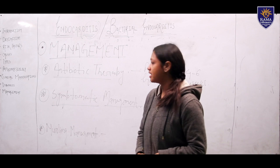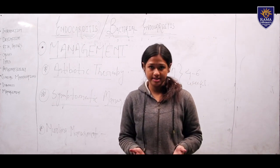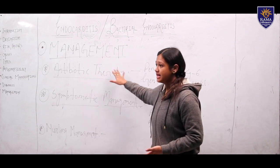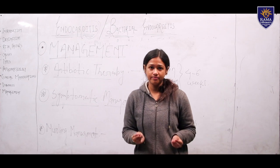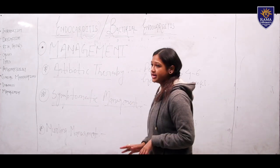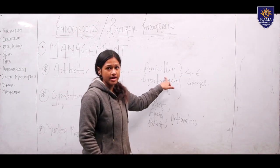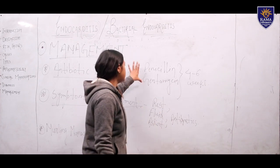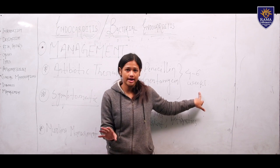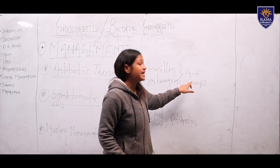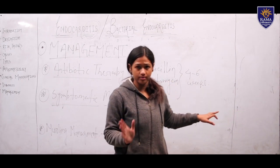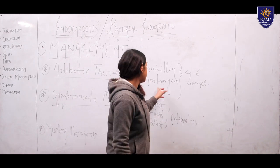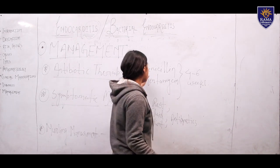For management of endocarditis, first is antibiotic therapy since endocarditis is caused by bacteria. The main drugs are penicillin and gentamicin, provided to the patient for a regime of 4 to 6 weeks. After the course, blood culture is done again at the hospital, and if bacteria are still present, long-term medications with these two antibiotics will be continued.